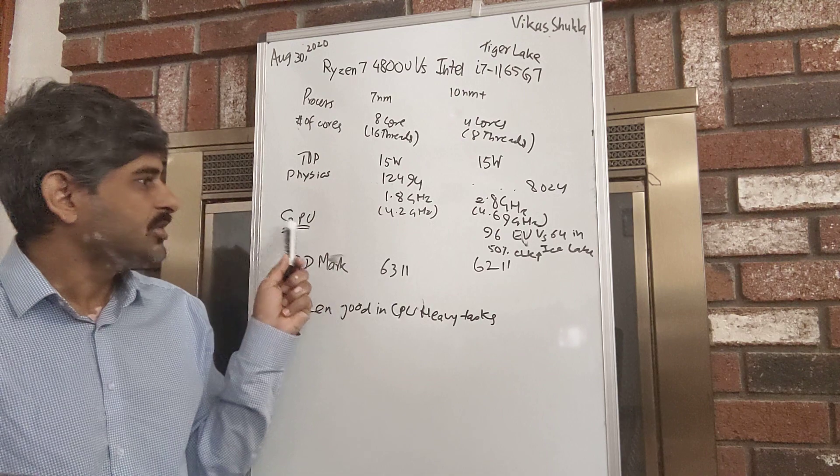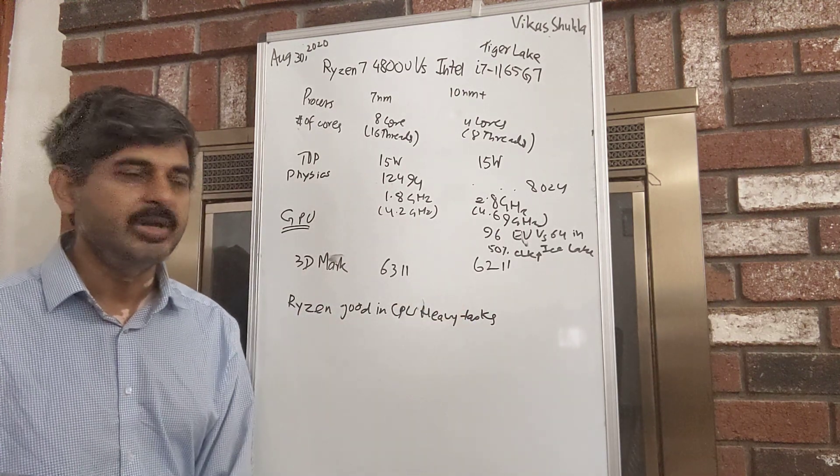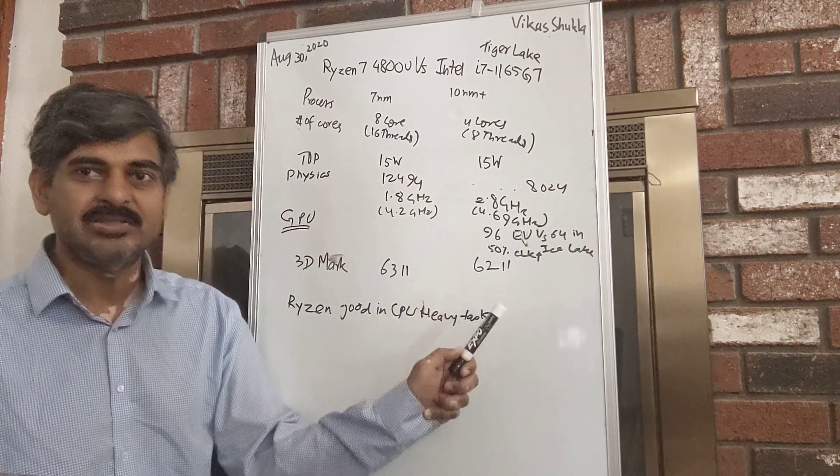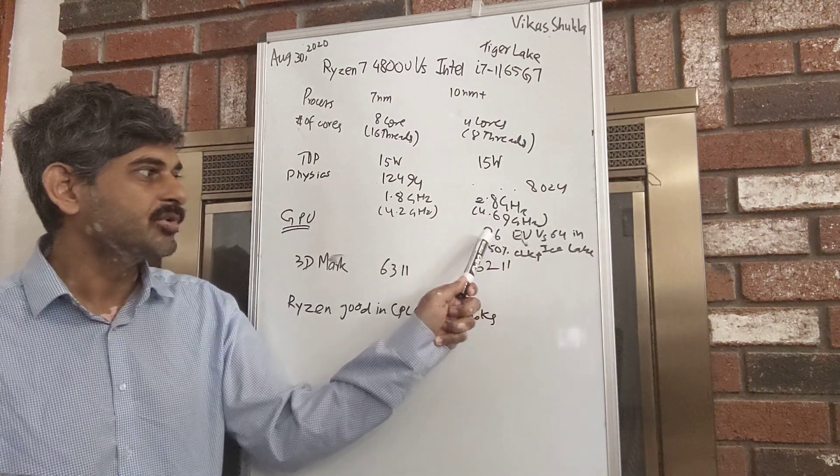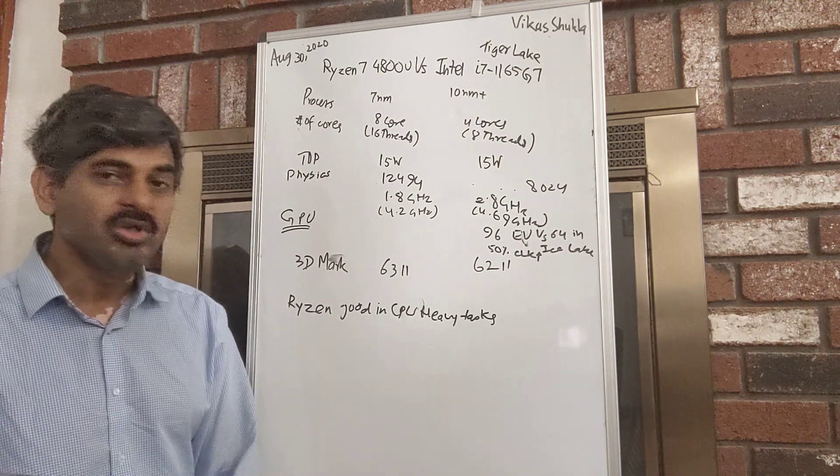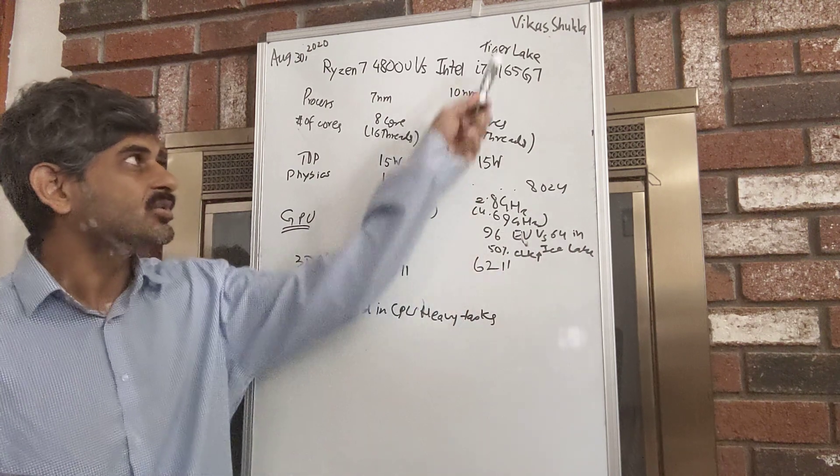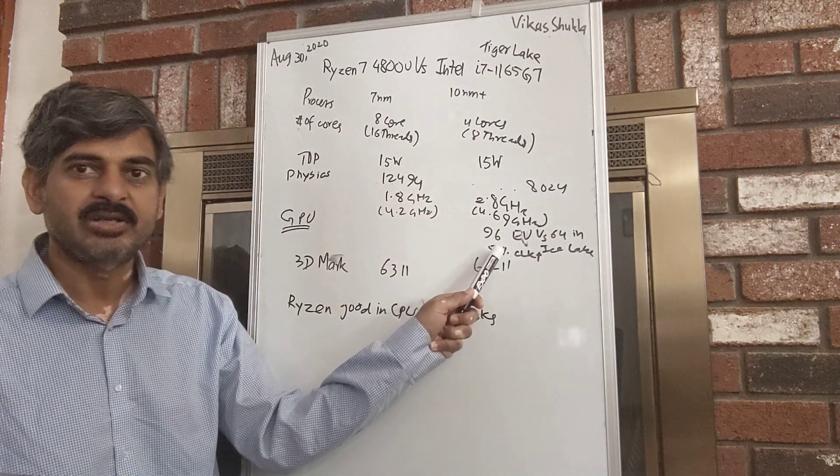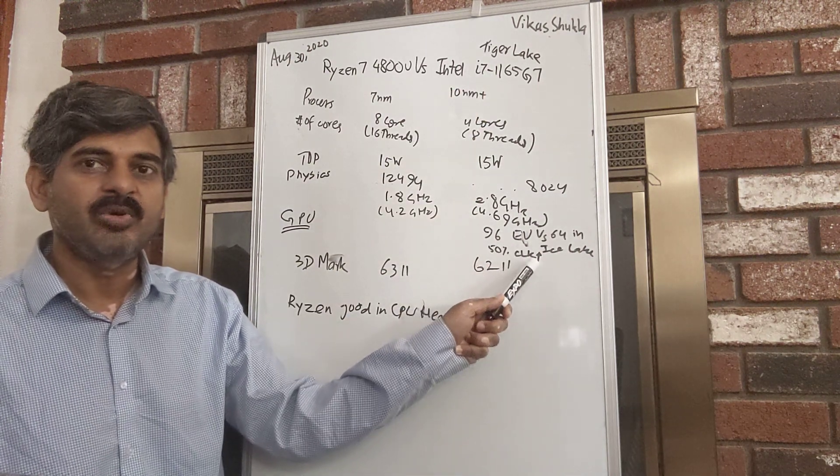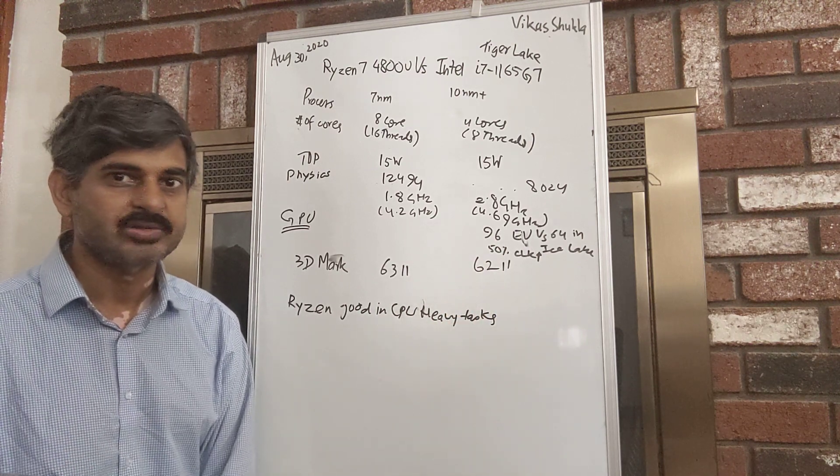Coming back to the GPU, the bulk of this improvement comes by increase in the number of execution units from 64 to 96, which is 50 percent increase. And then we also see that the clock frequency increase from Ice Lake to Tiger Lake by 50 percent. So 1.5 times 1.5 is 2.25, which roughly doubles the performance of the graphics processor.